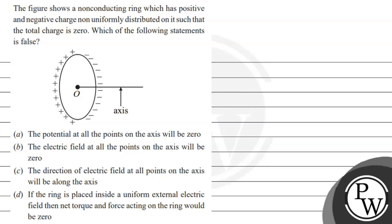Hello, let's read this question. The question says that the figure shows a non-conducting ring which has positive and negative charge non-uniformly distributed on it such that the total charge is zero.